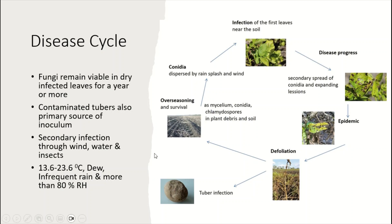After defoliation, the leaves are highly infected. Due to this defoliation, the tubers also become infected. The other aspect is overwintering, which occurs in the form of mycelia and conidia.